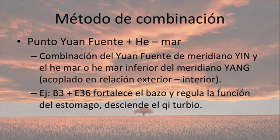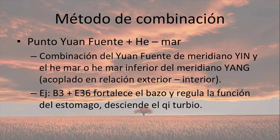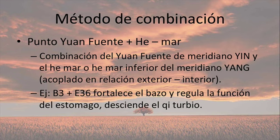El método de combinación de los puntos Yuan Fuente: los puedo combinar con los puntos Gemar. Puedo combinar el punto Yuan Fuente del meridiano Yin y combinarlo adicionalmente con el punto Gemar o el Gemar inferior del meridiano Yang que tiene relación Biao-Li con el meridiano que está enfermo. Por ejemplo, Vaso 3 con Estómago 36. Vaso 3 es el punto Yuan Fuente del meridiano de Vaso, y Estómago 36 es el punto Gemar inferior del estómago, que también me ayuda a regular el Chi a contracorriente.